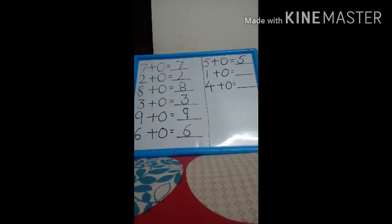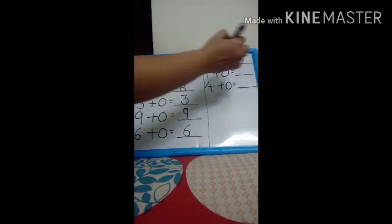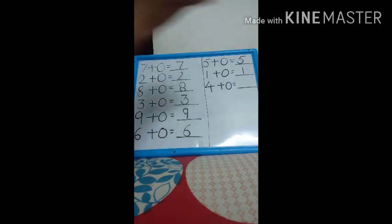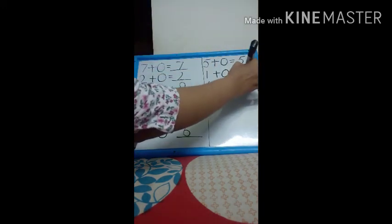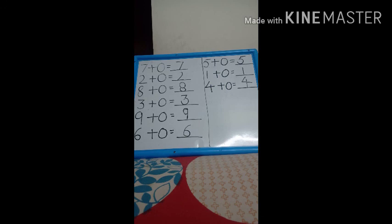Next. One plus zero. अब वन में अगर हम zero add करते तो क्या answer आएगा? Only one. Because zero means nothing. Now, next. Four plus zero. What will be the answer? Four. Because when we add anything to the number zero, then what will be the answer? The same number.